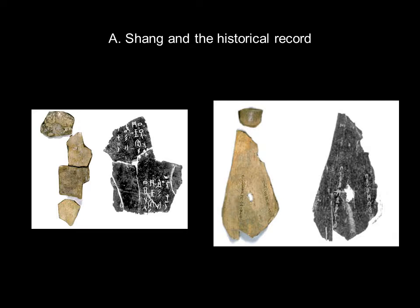One of the issues that sets the Shang Dynasty apart from its predecessor is the fact that they have left us an elaborate documentary record. And those records take the form of oracle bones. Oracle bones come in two varieties: they will appear as the scapula of oxen, or plastrons, which is simply the underside of the turtle shell. And these are going to be very large bones.